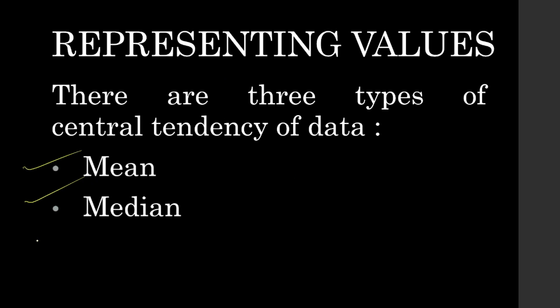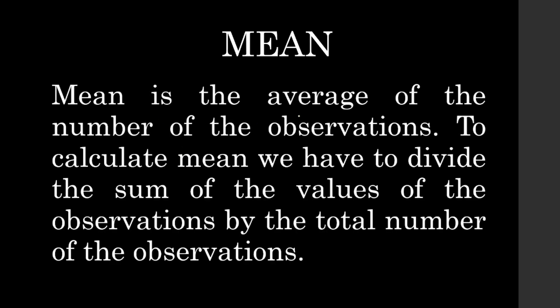Mean, Median, and Mode — these are the three central tendencies of data. Let's look at Mean. Mean is the average of the observations. Some people say average and some people say mean — mean is average and average is mean.